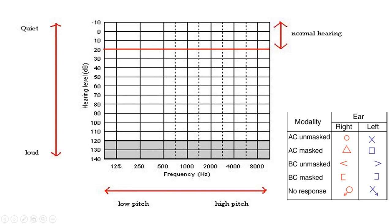For different frequencies, let's say for 250 hertz, if you cannot hear 10, 20, or 30 decibels but you can hear 40 decibels and louder, then for that frequency, 40 decibels is your threshold — the minimum intensity at which you can hear that frequency. Air conduction testing starts at 125 hertz, while bone conduction starts at 250 hertz.